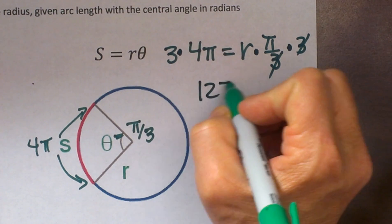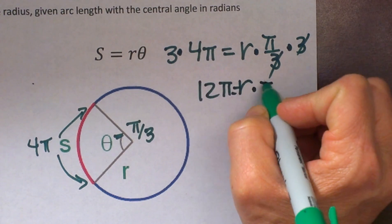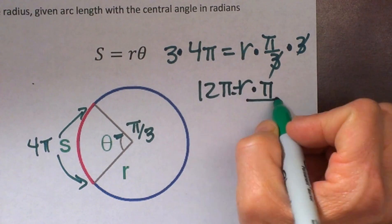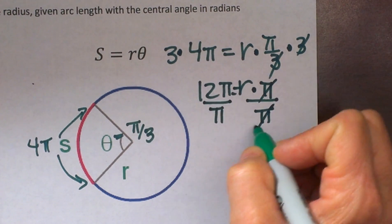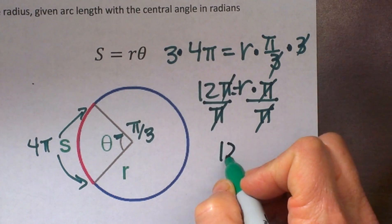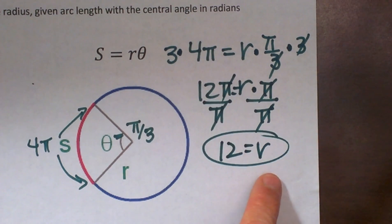So we get on the left 12π equals R times π. Now we need to get rid of the π so let's divide both sides by π, so we have 12 is equal to R. Our radius is 12. It is as simple as that in terms of radians.